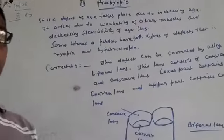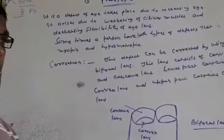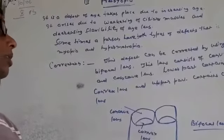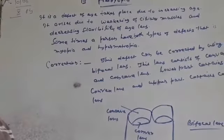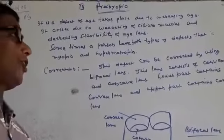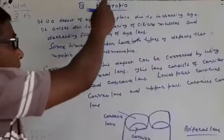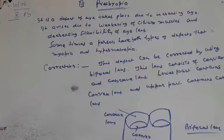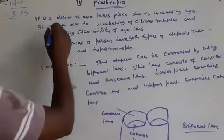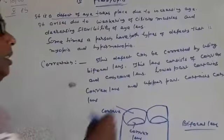All of you know, when the age of any people increases, due to increasing age, it is found that the accommodation power of eye decreases. So this defect happens due to age. It is a defect of eyes that takes place due to increasing age.